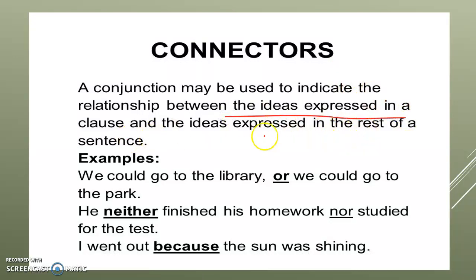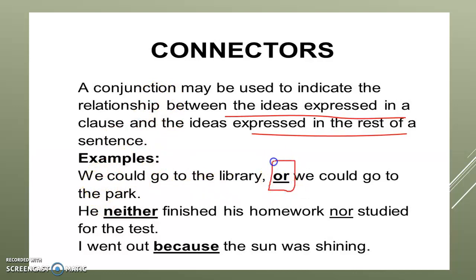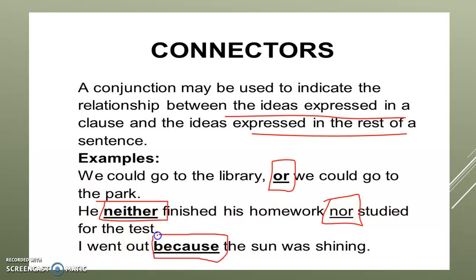These two ideas are combined with conjunctions. For example: 'We could go to the library or stay home' — 'or' is the conjunction joining the two ideas. 'He neither finished his homework nor studied' — 'neither/nor' is a pair. 'I went out because the sun was shining' — 'because' is the connector.